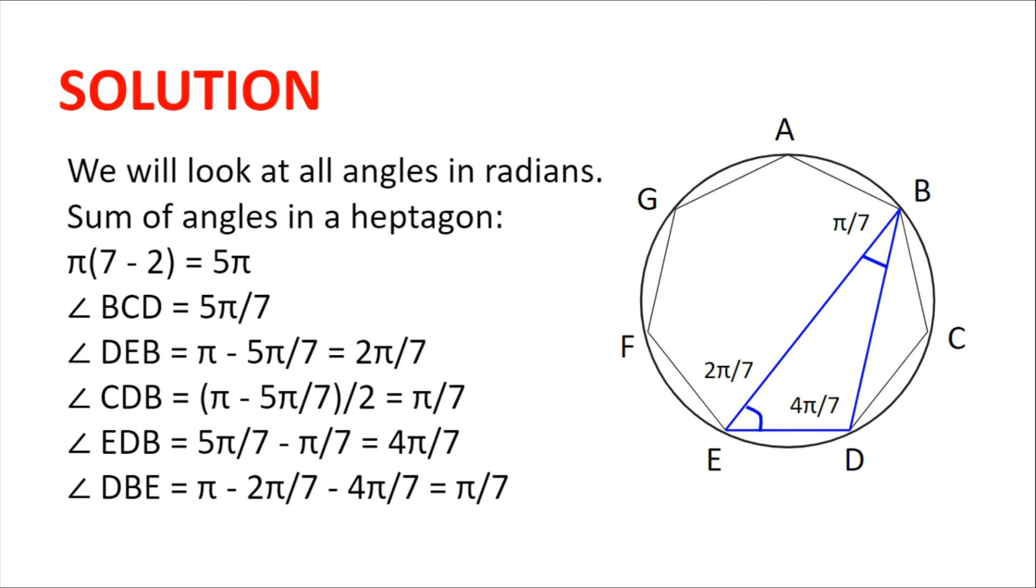As we see, because π/7 multiplied by 2 is 2π/7, which multiplied by 2 gives 4π/7, the angles of this triangle are in geometric progression.